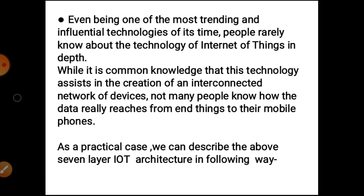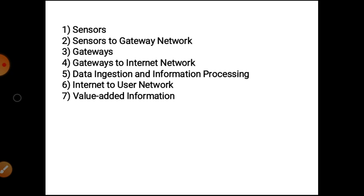As a practical case, we can describe the above seven-layer IoT architecture in the following way. The first layer is sensor. Next is sensor to gateway network. Next layer is gateways. Next layer is gateways to internet network. After that, data integration and information processing. Next layer is internet to the user network. And the last layer of the IoT architecture is value-added information.